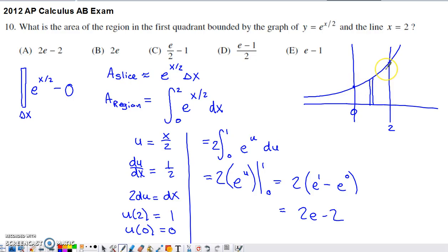over toward the left or the right edge of the region, the top of every possible slice that we could have drawn is going to be on this graph. So the y value on that graph is y equals e to the x over 2,